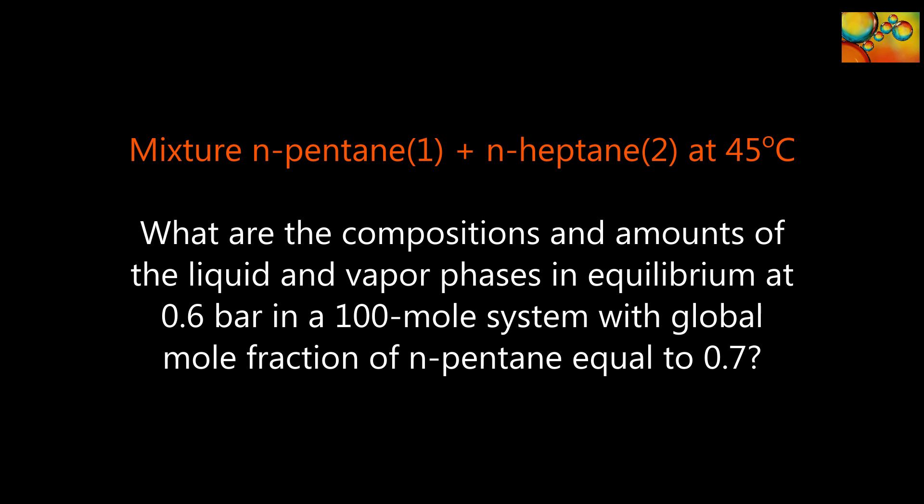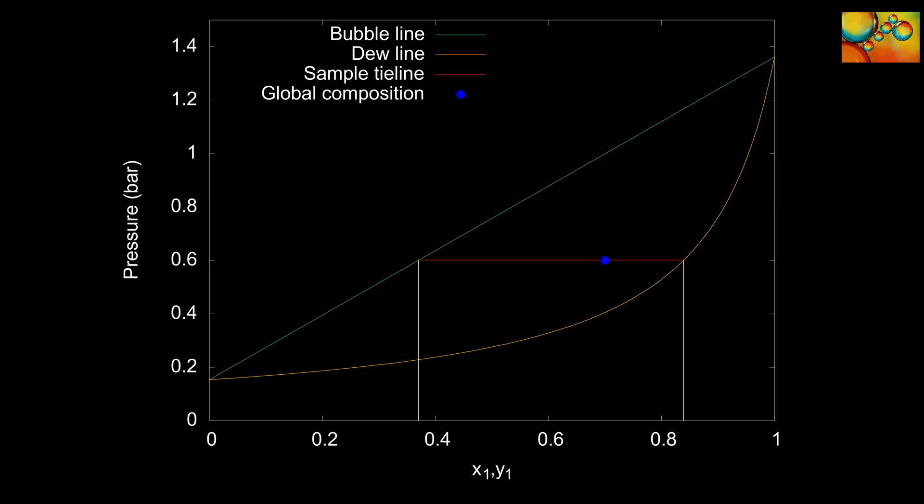We now move on to a different problem in which we'll use the phase equilibrium conditions jointly with the mass balance. The goal is to find the composition and amounts of the liquid and vapor phases in equilibrium at 0.6 bar in a 100 mole system with a global mole fraction of n-pentane equal to 0.7. The global composition is represented by the blue dot in the diagram, and the tie line at 0.6 bar is the same as in the previous problem. The mole fractions of n-pentane in the liquid and vapor phases will be 0.37 and 0.84 respectively.